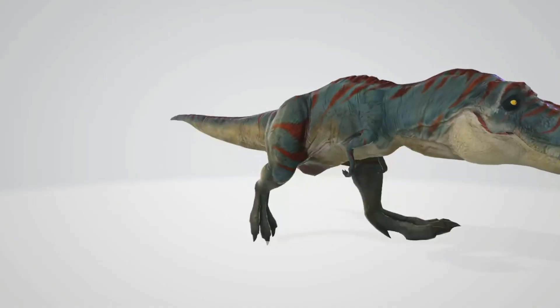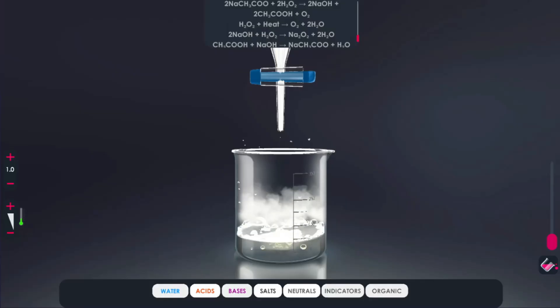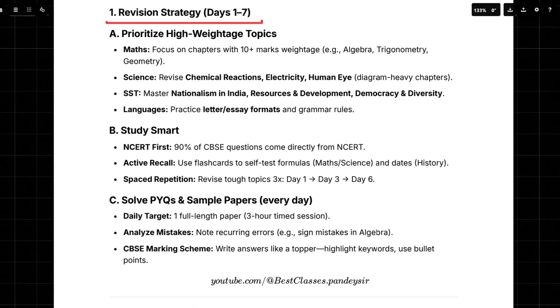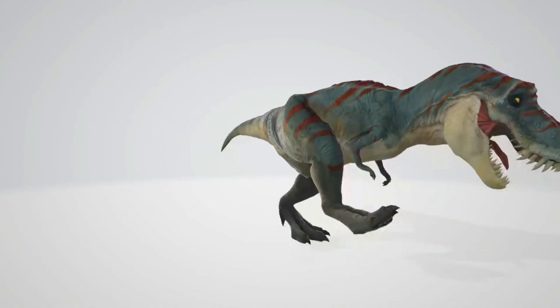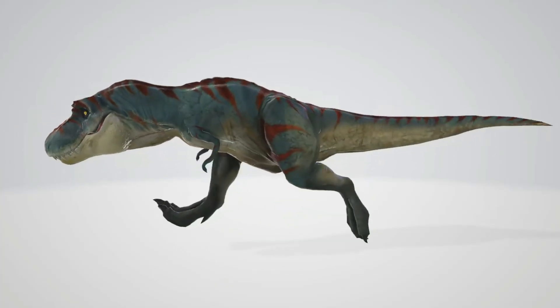So what are some examples of these high-weighted topics? Well, for math, it's all about algebra, trigonometry, and geometry. Those are big ones. They kind of form the foundation for so much of the curriculum. And for science, they highlight chemical reactions, electricity, and of course, the human eye. Especially those diagrams. Those can be worth a lot of marks. It's all starting to make sense now, but how do we know what to prioritize? Is there a method to this madness?